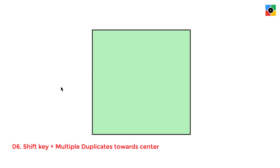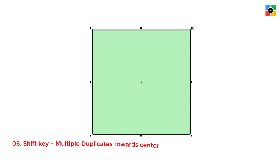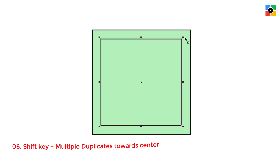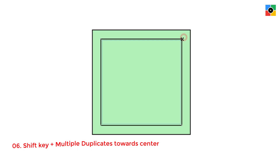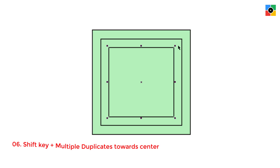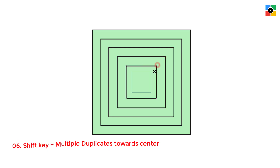To create multiple duplicates of a perfect rectangle towards the center: select the rectangle, press and hold the Shift key, click and hold any corner handle, drag the mouse towards the center, click and hold the right mouse button, leave the left mouse button first, then leave the right mouse button. Repeat — click and hold any corner handle, drag to the center, click and hold the right mouse button, leave the left mouse button first, then leave the right mouse button. Finally release the Shift key. You can create multiple duplicate objects towards the center this way.